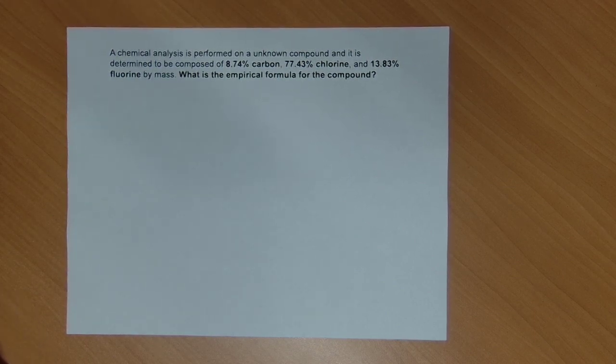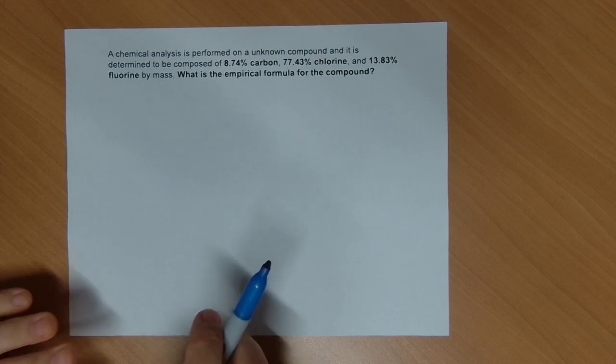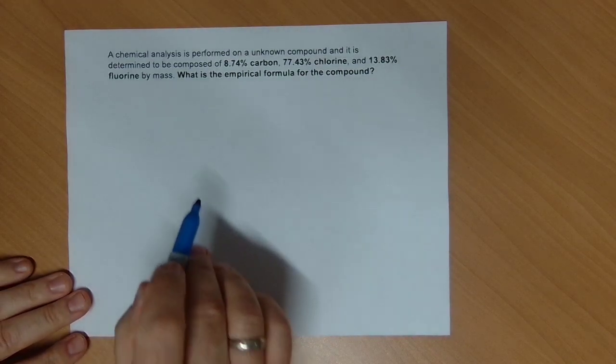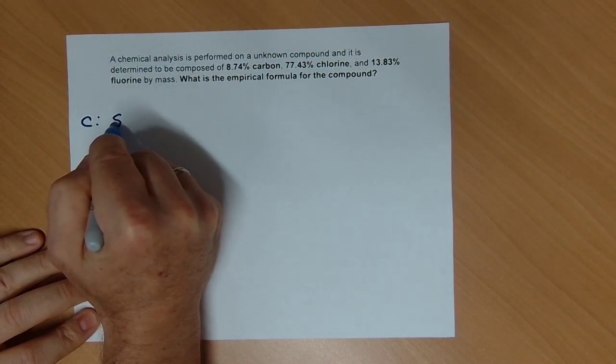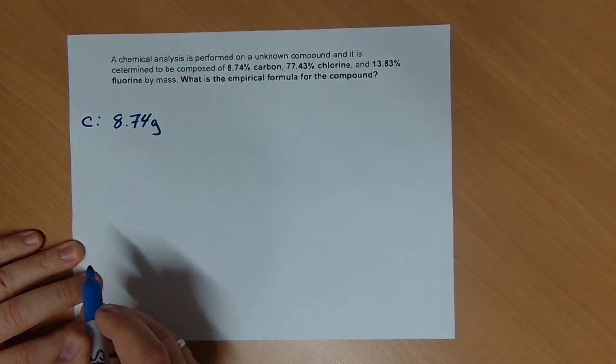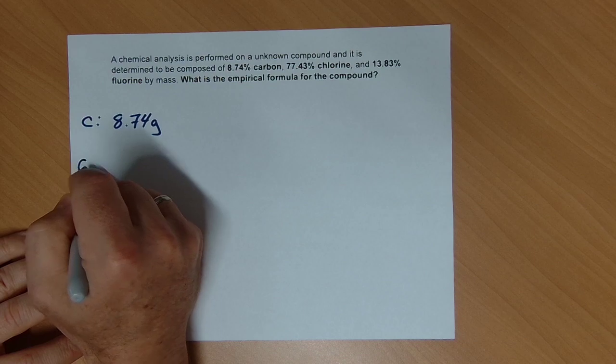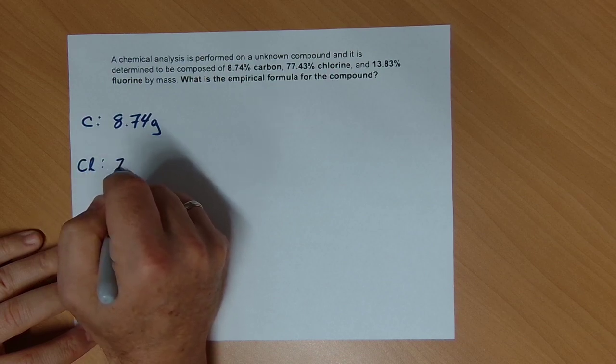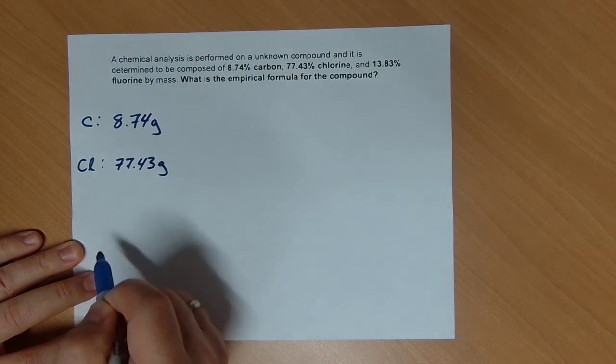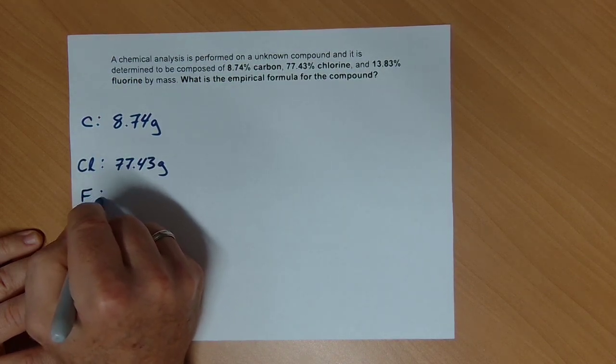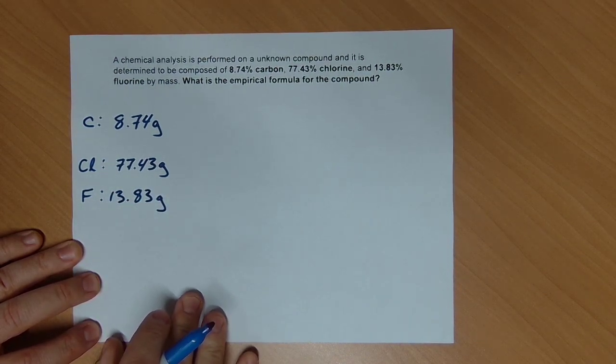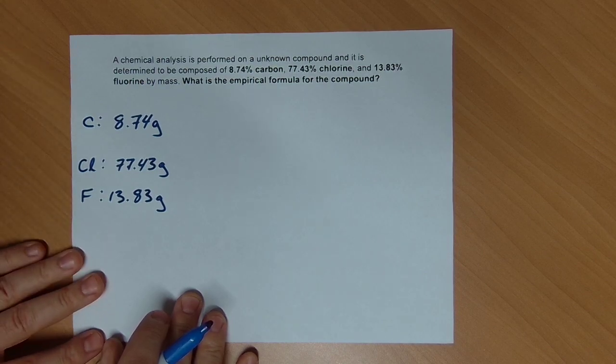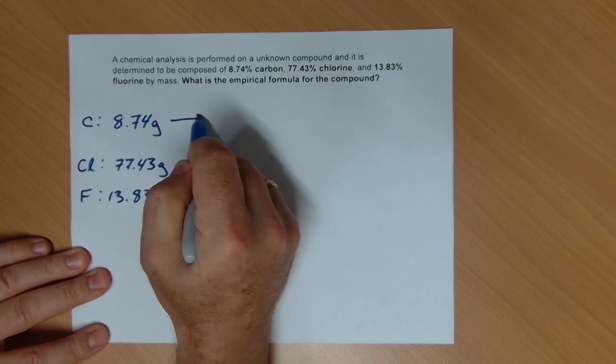So what I'm going to do, you can always feel free to do this. There's a simplicity to these types of problems where you can assume that you have 100 grams of material. And if I have 100 grams of material, I'm going to immediately come over here and I'm going to say for carbon, I have 8.74 grams of material. I'm going to come down here and for chlorine, I'm going to say that I have 77.43 grams of material.